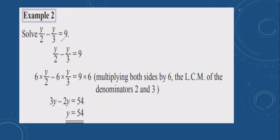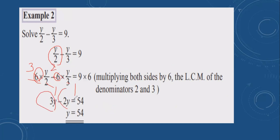Next: y over 2 minus y over 3 equals 9. You have to find the LCM of 2 and 3, which is 6. Multiply both sides by 6. 6 divided by 2 is 3, so 3y; 6 divided by 3 is 2, so 2y. 3y minus 2y is 1. Doing the same to the other side: 9 times 6 is 54. So y is equal to 54.